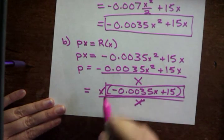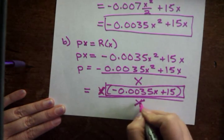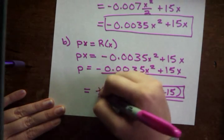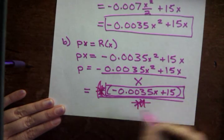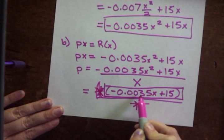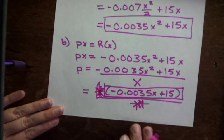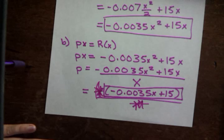And when we did that, we got cancellation. Which is kind of hard to cancel an x, I guess. Don't look at those x's. And that left us with negative 0.0035x plus 15 as our demand equation.